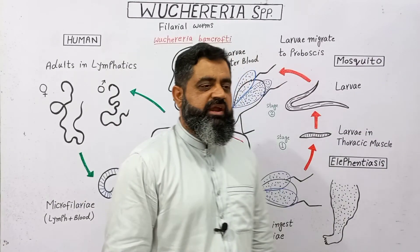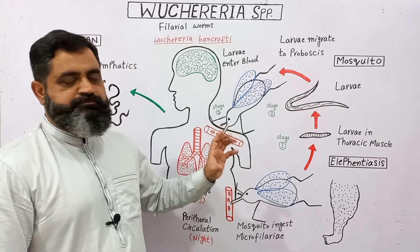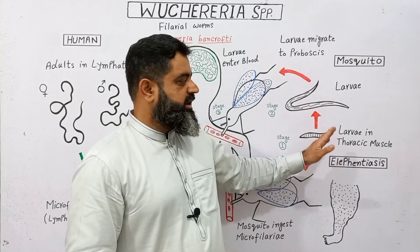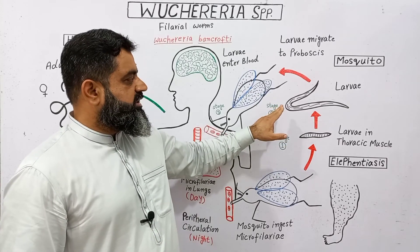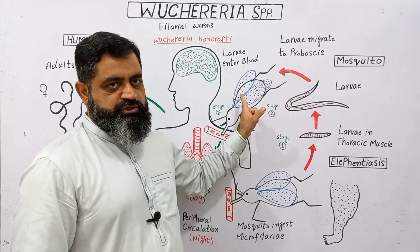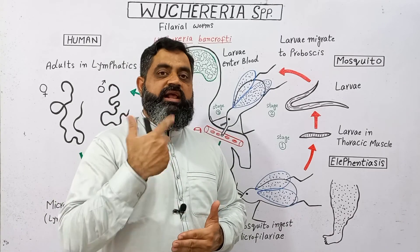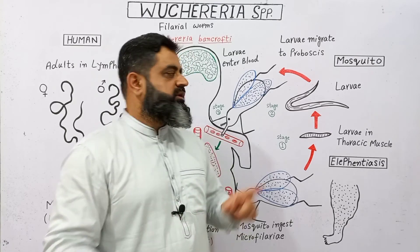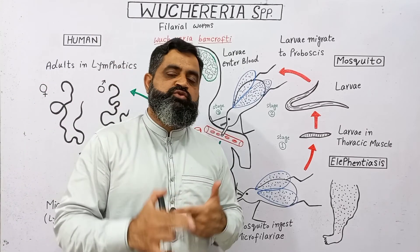The mosquito ingested microfilariae from the blood, and the microfilariae reached the thoracic muscles of the mosquito. In the next stage, this stage 1 larva is present in the thoracic muscles of the mosquito. After molting, it develops into a stage 2 larva inside the thoracic muscles, and after a second molt, these larvae move into the proboscis and head of the mosquito, becoming stage 3 larvae. Now this mosquito is ready again to bite another healthy person and transmit this stage 3 larva, infecting that healthy person as well.